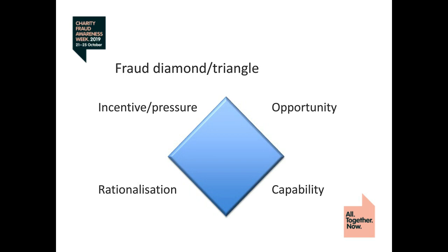Opportunities are loopholes that could be exploited to commit fraud. Pressures or incentives are the internal or external factors that push someone to commit an act of fraud. Rationalization is the justification of the action by the perpetrator. Proponents of the fraud diamond theory state that one must also have the right capability to commit fraud. Without capability, they would not be able to do so.